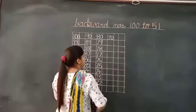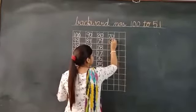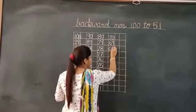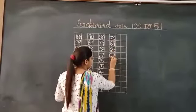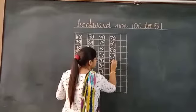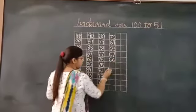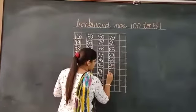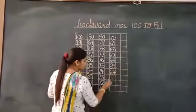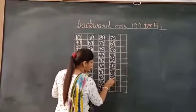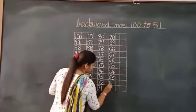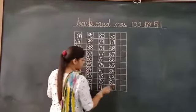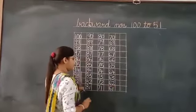Okay, which number will come before 70? Before 70, answer is 69, 68, 67, 66, 65, 64, 63, 62.